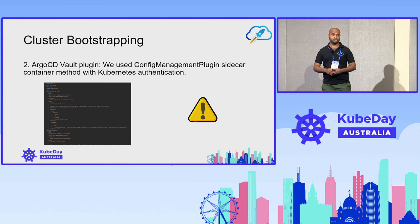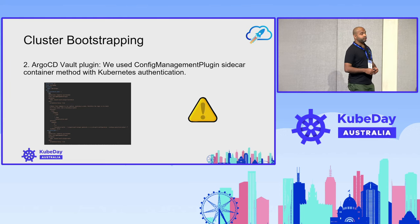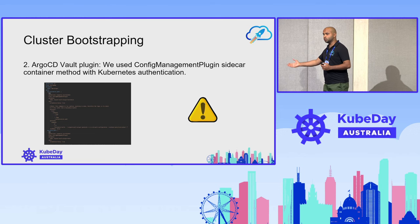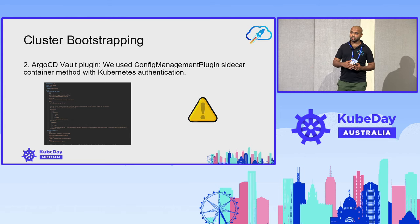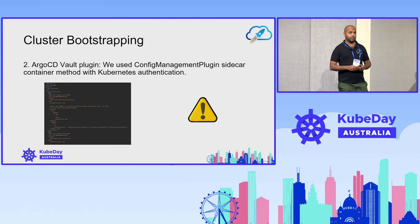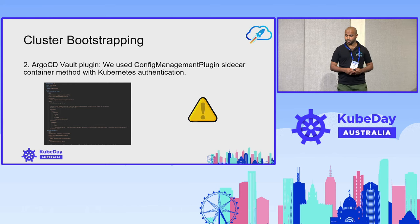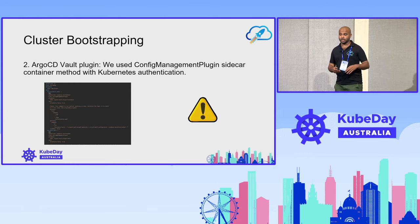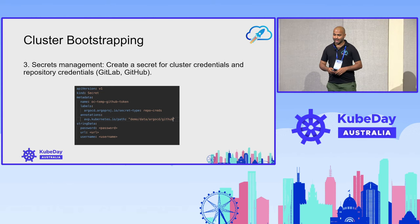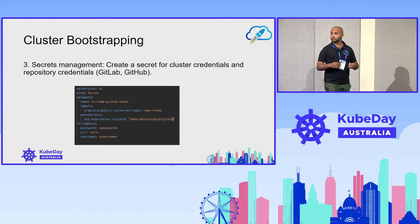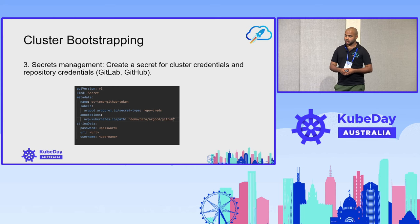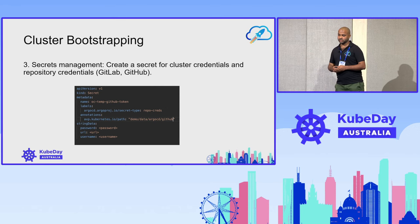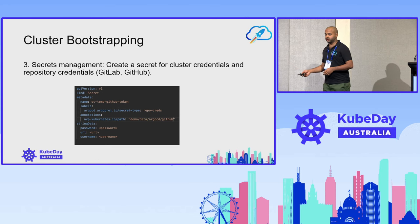The Argo CD Vault plugin — we found this to be very handy. External Secrets Operator is great and we did initially begin with that. It's great if you want to write back secrets to Vault. But if you're not necessarily writing back to Vault, you'll find that the Argo CD Vault plugin covers most of what you require. It will translate the secrets and provide them directly into your cluster without you having to mention them within your GitHub setup. You can also set up a GitHub or GitLab template to manage repository credentials and cluster credentials.